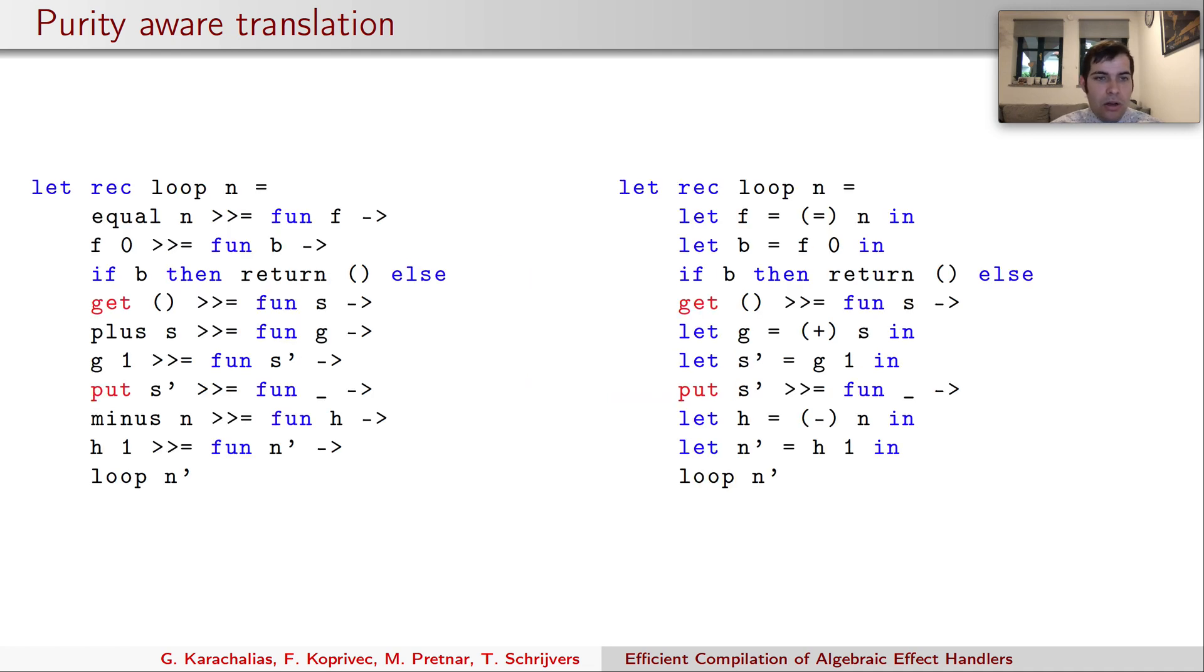Let's see an example. On the left side, we have a full loop compiled without the purity-aware translation where everything is in the monad and on the right side we have the loop function compiled with the purity-aware translation where the pure computations are translated as simple let binds that are much faster.